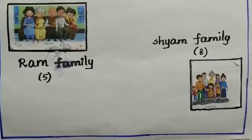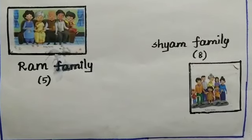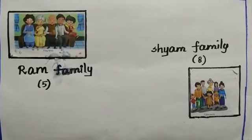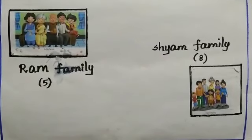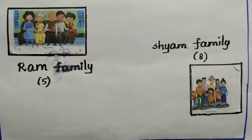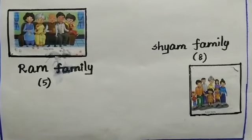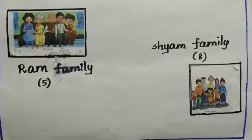In Ram's family five members are there, whereas in Sham's family eight members are there. Can you tell me how many more members in Sham's family when compared to Ram's family? Yes, three more members. How you got the answer? Eight minus five is equal to three.